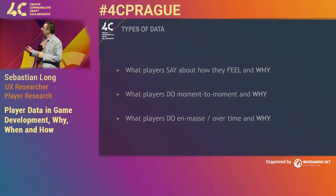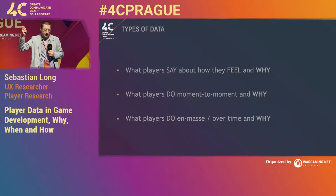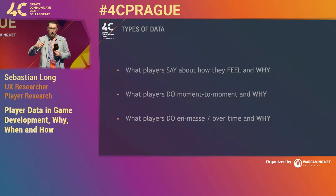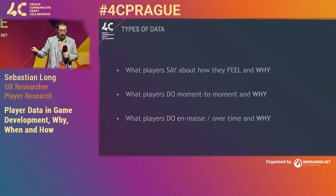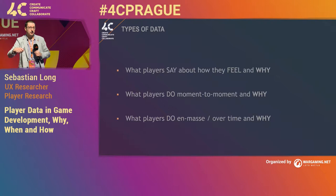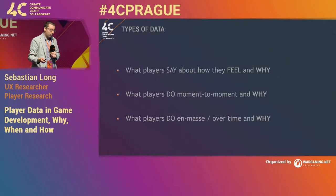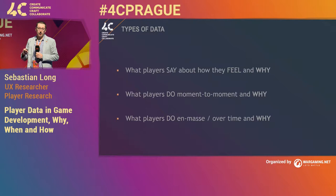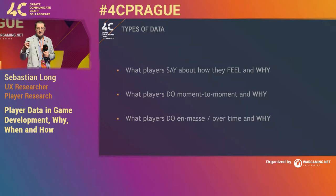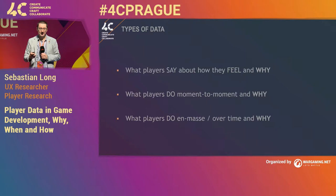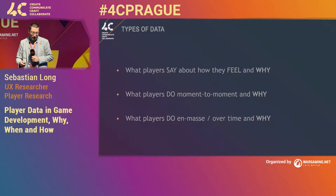When thinking about data, we're often flitting between three different buckets. What players say about how they feel and why. What players do moment to moment — when they see the icon, when they see that feedback, what do they do and why? And what players do en masse — our whole player cohort, a big A-B split test. We can look at small groups and large groups. We're also looking at differences between players' attitudes and their behaviors. The most important part is the 'why.' Good data requires asking why until we have a cause.